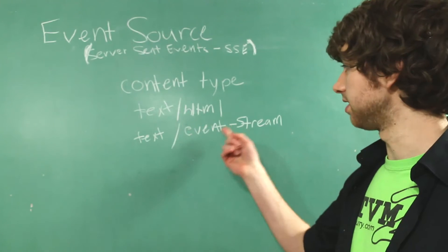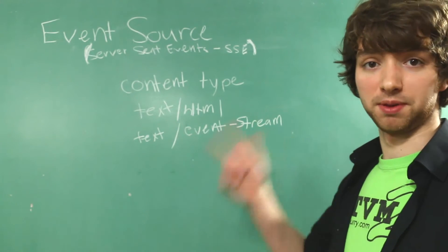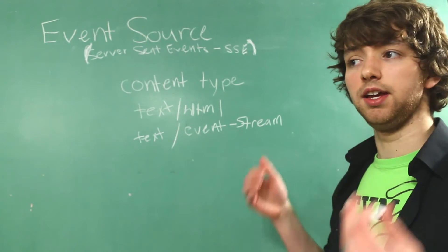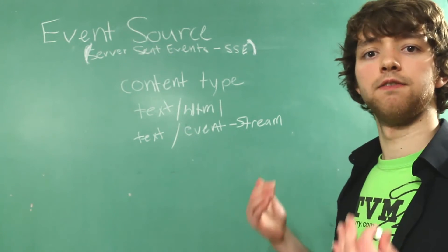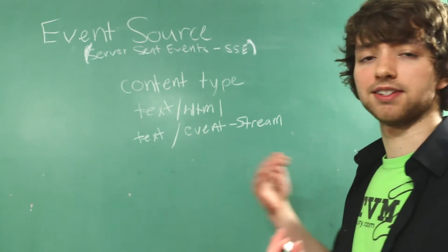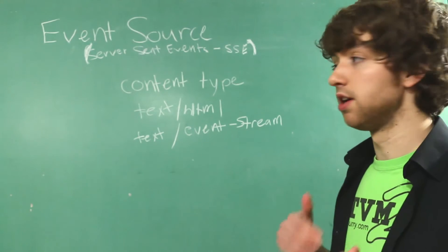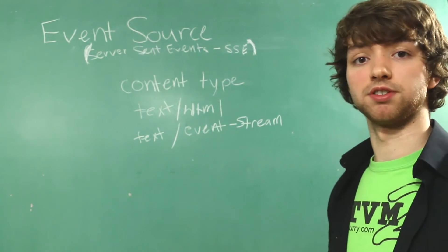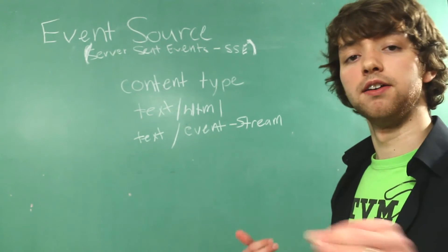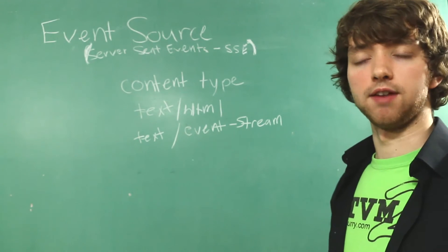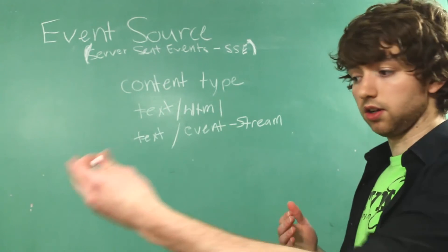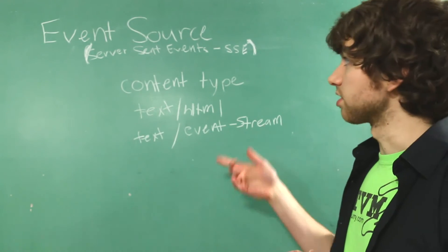The text/event-stream content type is where the magic happens. When the client gets this, it starts listening for new data — it's a stream, it's expecting to get new data. This opens a one-way persistent connection from the server to the client, very similar to how forever frame allows the server to send stuff to the client.